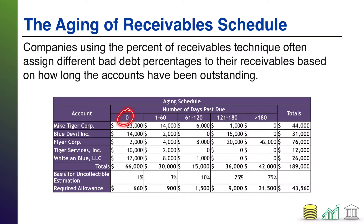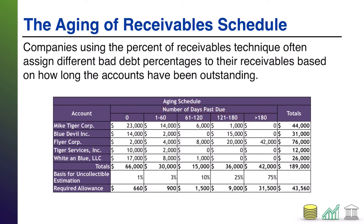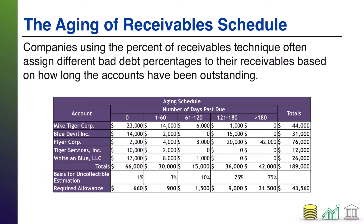By doing this, I can figure out that based on how old a receivable is, the risk of it not being paid is going to change. Specifically, if something is not yet due, chances are it hasn't been paid yet because it's just not due yet, and so I have a very low risk of my customers not paying me. Notice down here, to this bucket I have assigned a one percent assumption of uncollectibility — notice I have over here: 'basis for uncollectible estimation.' However, once something goes past due, the risk of uncollectibility goes up.